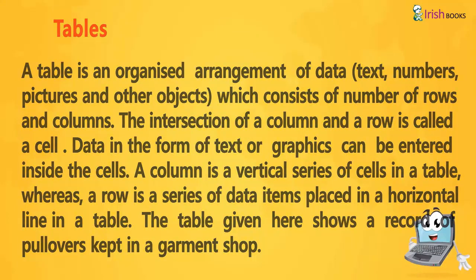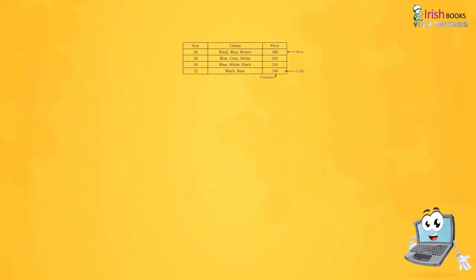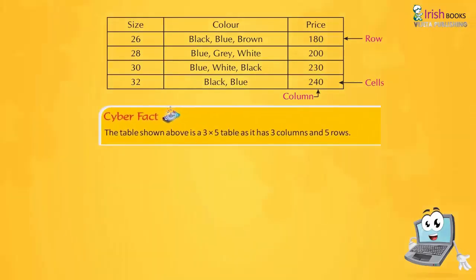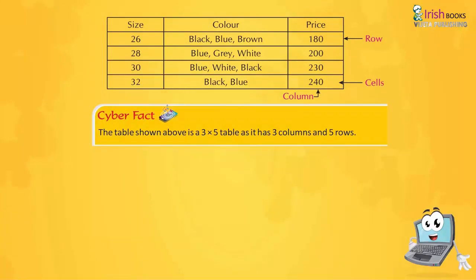The table columns are: Size, Color, and Price. Size 26: Black, Blue, Brown — Price 180. Size 28: Blue, Gray, White — Price 200. Size 30: Blue, White, Black — Price 230. Size 32: Black, Blue — Price 240. Cyber Fact: The table shown above is a 3x5 table as it has 3 columns and 5 rows.